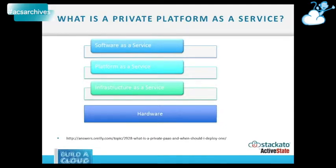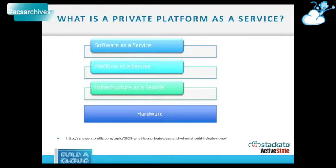First, I want to make sure we're all on the same playing field and answer: what is a private platform as a service? You've heard all these acronyms before. Infrastructure as a service makes servers and hardware elastic. Platform as a service helps us deploy the stack your application needs — beyond just the empty Linux box you get with IaaS. You also need web servers, routers, load balancers, language distributions, libraries, and web frameworks.